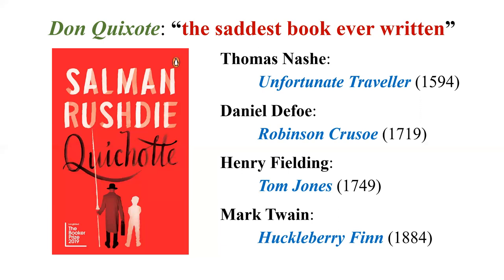About Don Quixote, the famous Russian writer Dostoyevsky said, 'It is the saddest book ever written.' Why? Because at the end of the novel, Don Quixote dies when his illusions are gone — his imagination disappears and he can no longer imagine another world. Once his dreams are done, he has to die. That is why Dostoyevsky calls it the saddest book ever written.